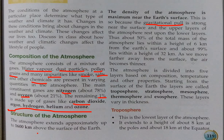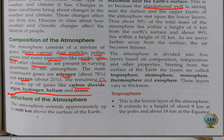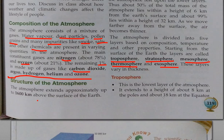As we move further away from the surface, the air becomes thinner. The atmosphere is divided into 5 layers based on composition, temperature, and other properties. Starting from the Earth's surface, the layers are: Troposphere, Stratosphere, Mesosphere, Thermosphere. These layers vary in thickness.